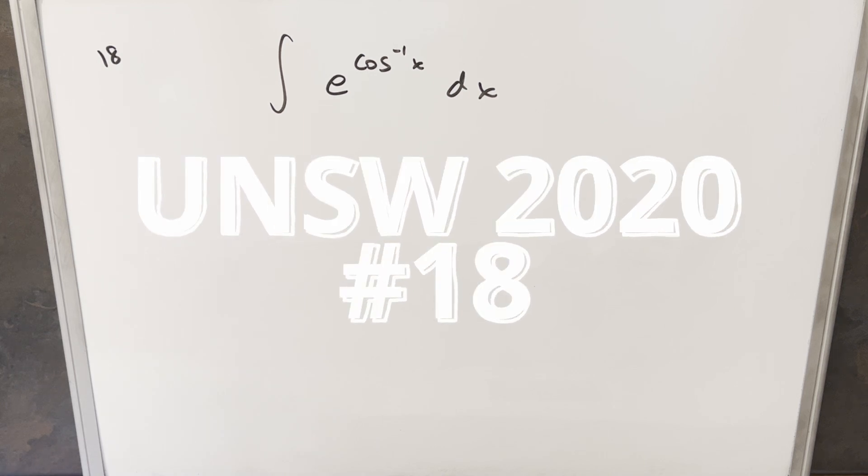Okay, we have here kind of an odd-looking integral from the UNSW integration B 2020 problem 18. We have the integral of e^(arccos(x)) dx.